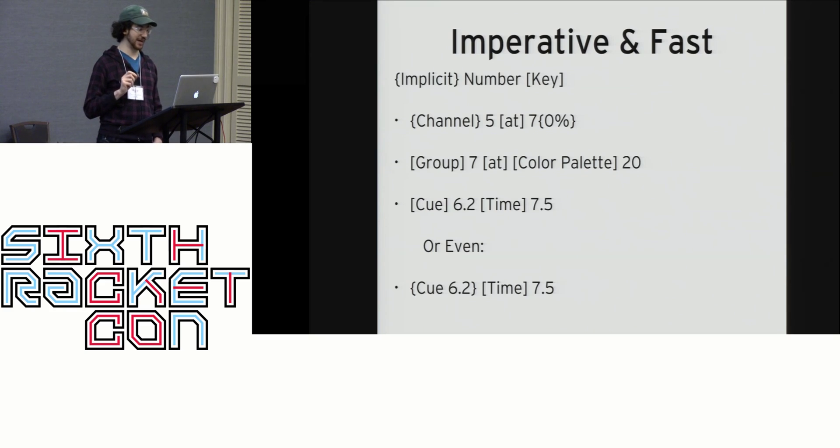You can see here how a lighting board uses implicit commands to speed up programming. When you type a digit, it automatically puts the channel command in front of it. If you want to modify the time of an active cue, one simply has to type the time button, and the board places the active cue number before it.